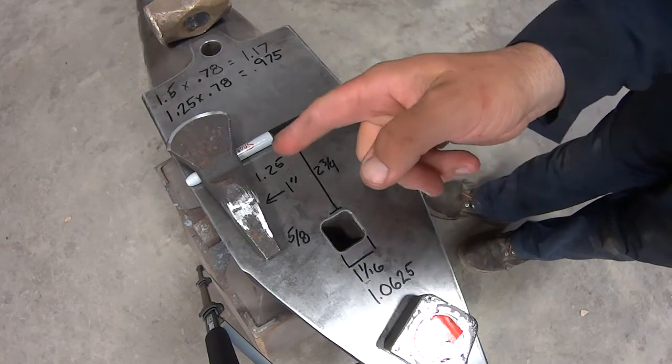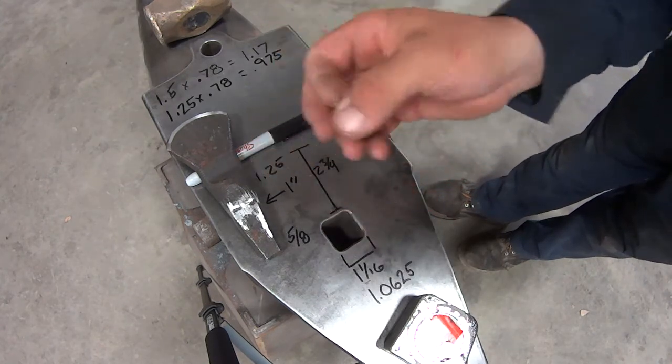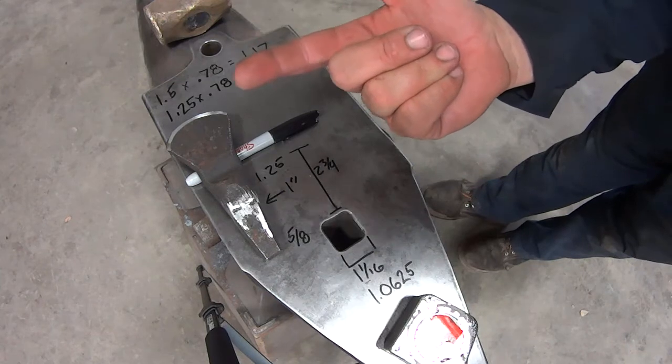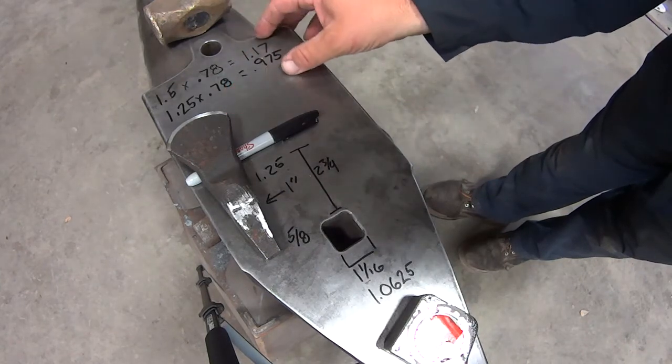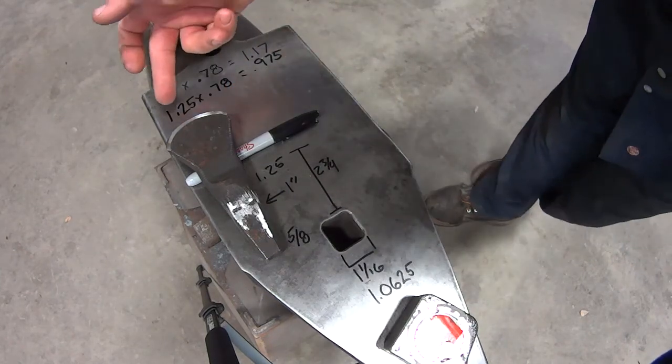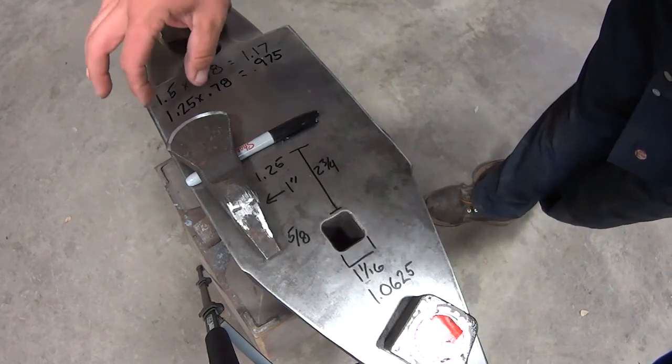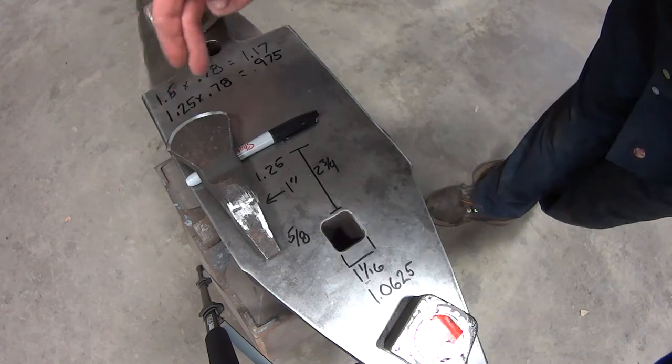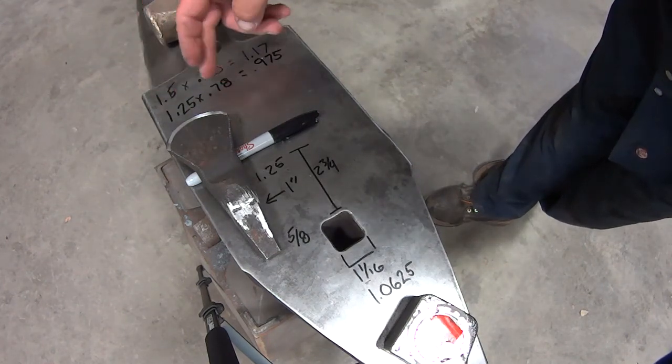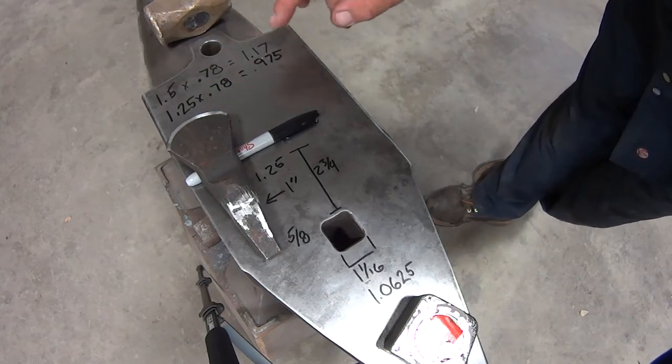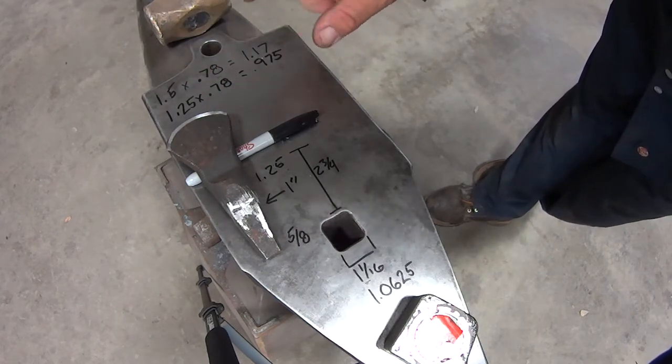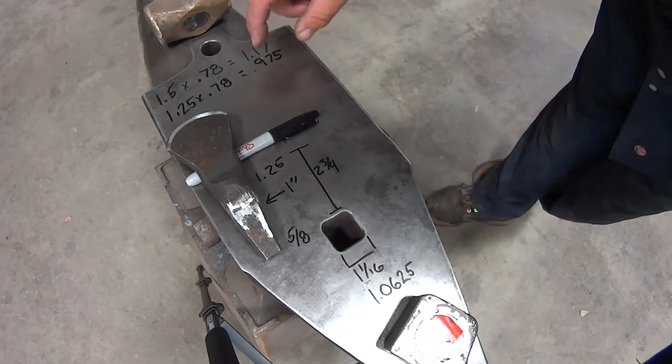Anyways, this one was made out of inch and a quarter material. I've got the measurements up here. If you take inch and a quarter round and you take it to square, you're going to get about almost an inch of material square.